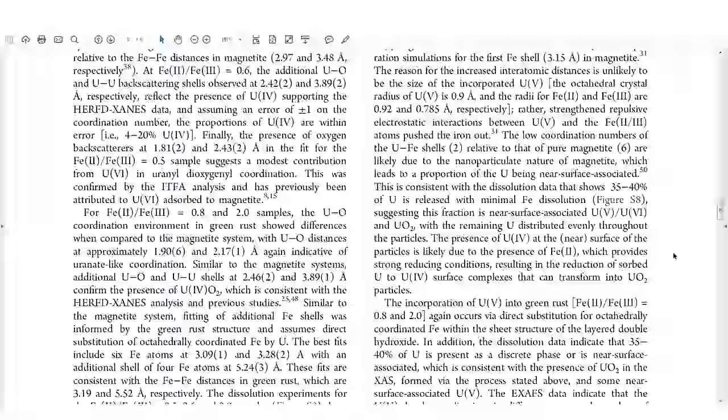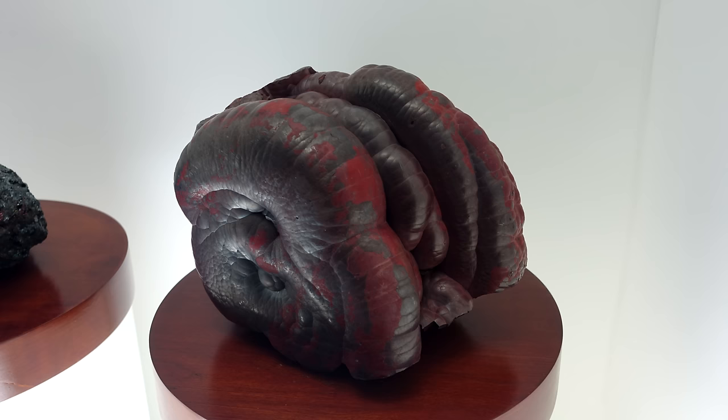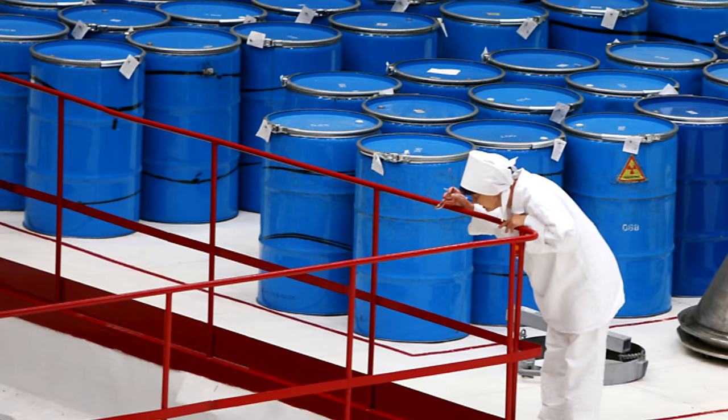Also, 5-valent uranium is often stabilized by iron ions, for instance, in such an iron ore as magnetite. That is why scientists are seeking to use it for a more efficient nuclear fuel recycling.